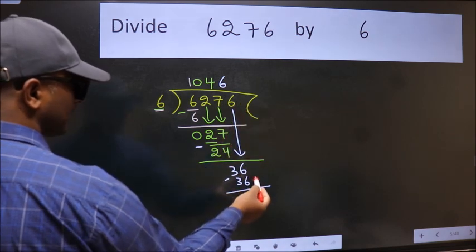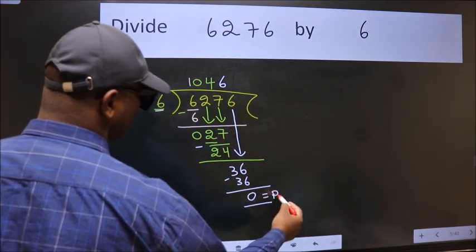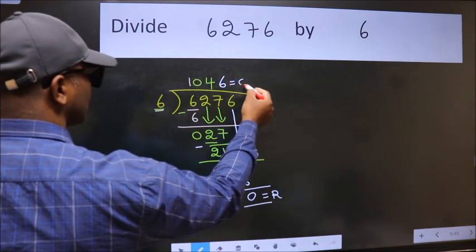No more numbers to bring it down. So we stop here. This is our remainder and this is our quotient.